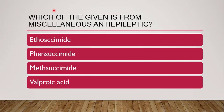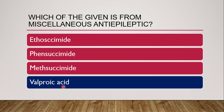Next question: which of the given is from the miscellaneous antiepileptic class — ethosuximide, fensuximide, methsuximide, or valproic acid? The above examples are succinimides, so the correct answer is valproic acid. Other miscellaneous examples include carbamazepine, which is a TCA chemically similar to tricyclic antidepressants, fenasimide, and gabapentin.